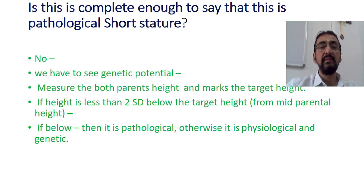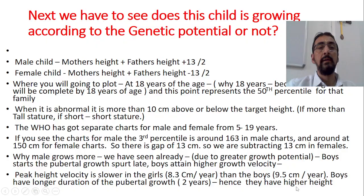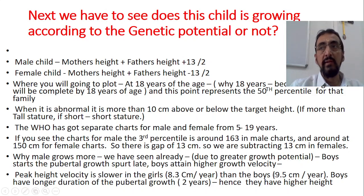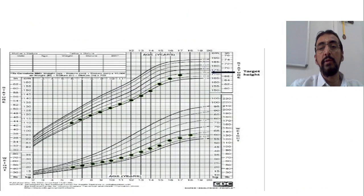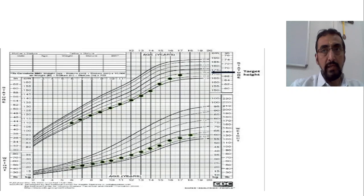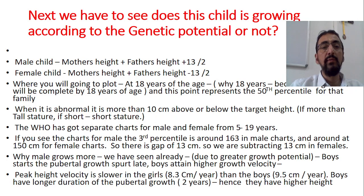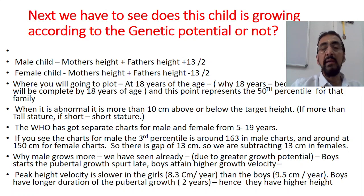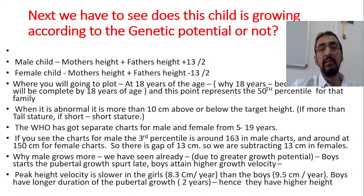In the last class we discussed two important things: the genetic potential of growth has to be assessed, and the present height of the child has to be plotted against the growth chart. We discussed how to calculate parental height in a male child. For male: mother's height plus father's height plus thirteen divided by two. For female: mother's height plus father's height minus thirteen divided by two.